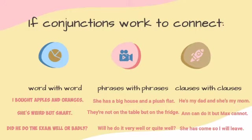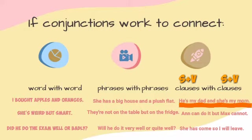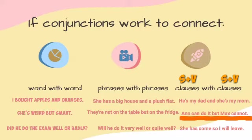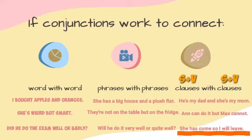Now let's look at three examples of conjunctions connecting clause with clause. In the first sentence, 'and' connects the subject-verb pair 'he is' with 'she is.' In the second sentence, 'but' connects 'can' with 'cannot.' In the last sentence, the conjunction 'so' connects the clause 'she has come' with the clause 'I will live.'